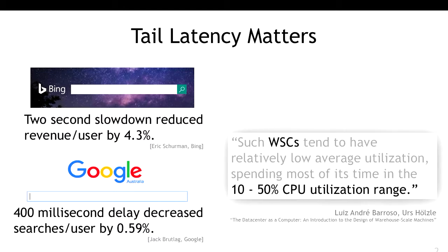If you look at data center servers that back up search, their utilization is pretty low. There's a reason: if you push utilization too high, it becomes very hard to control latency. From their reports, normal utilization is between 10 and 50 percent.